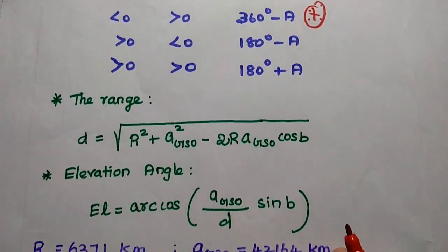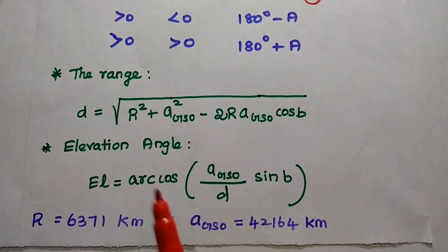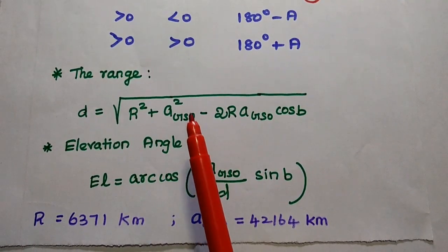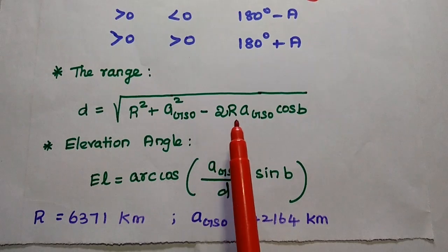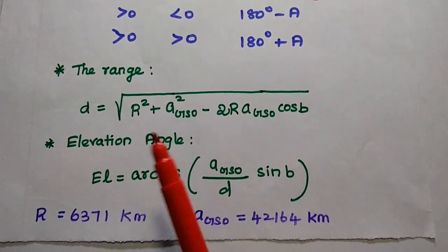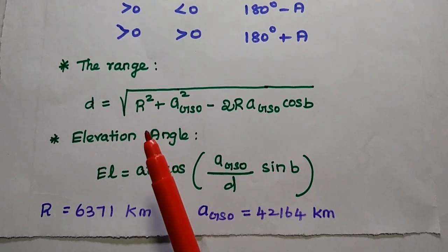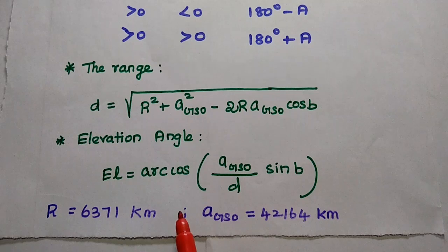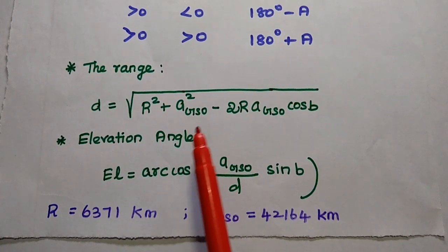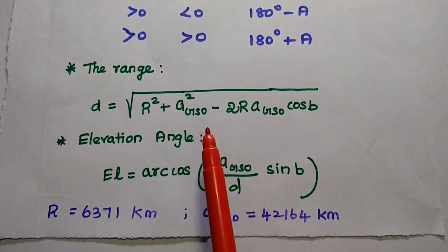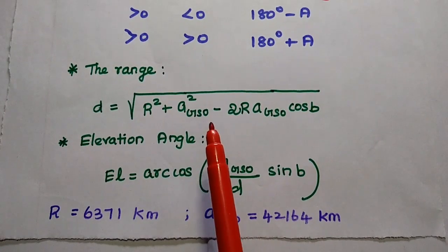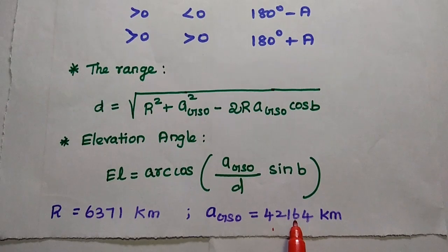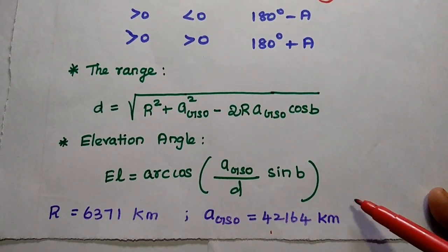The next formula is for the range D. The formula is D equals the square root of (R² + A_GSO² − 2 × R × A_GSO × cos b). Here R is the mean radius of the earth, which is 6,371 kilometers, and A_GSO is the mean radius of the geosynchronous orbit, which is 42,164 kilometers. These two values are important and must be remembered.